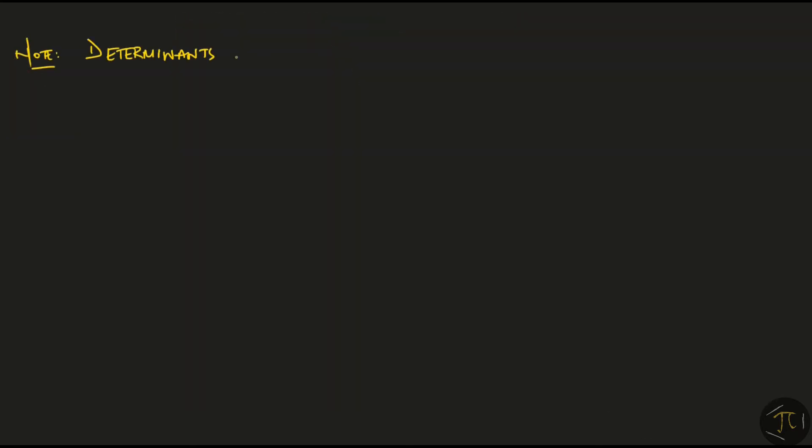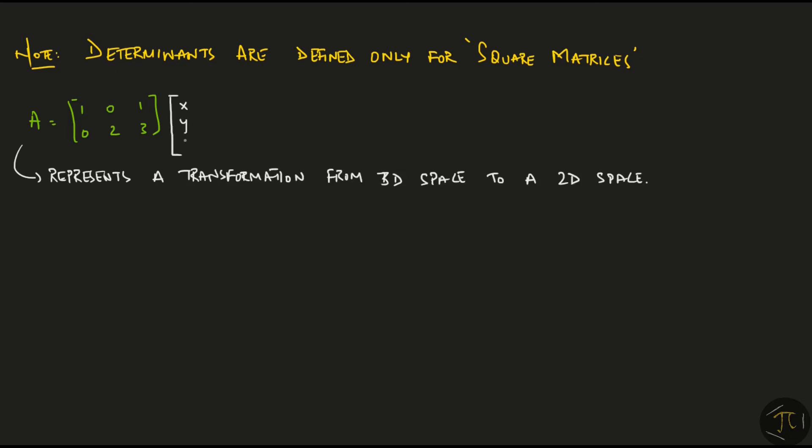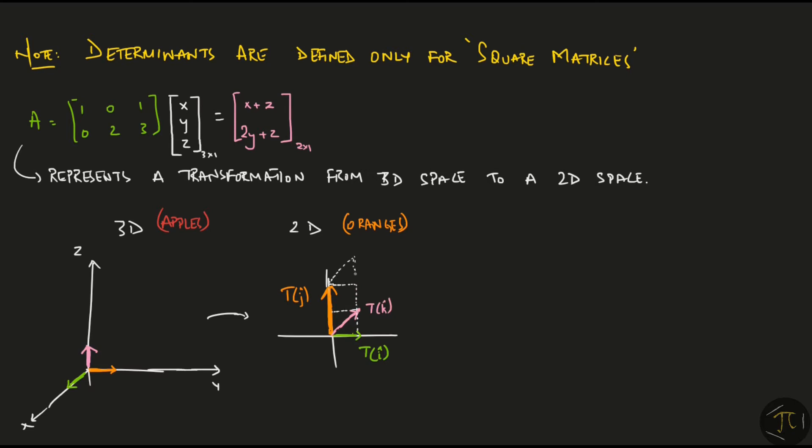An important thing to remember is that determinants are defined only for square matrices. If I were to take a rectangular matrix like this one, it would be the transformation of a vector from 3D space to a 2D space. The input vector is xyz but the output vector only has two components. Graphically, you can see that it's a comparison of apples and oranges. We get 3 output vectors. How would we even make a box from 3 vectors consistently every time? Moreover, the basis vectors in 3D would form a cube but the transformed basis vectors which are in 2D can never form a 3-dimensional object. That's why determinants are only defined for square matrices.